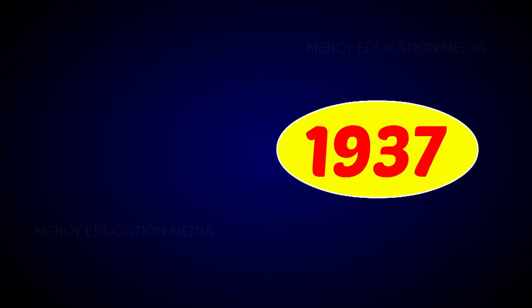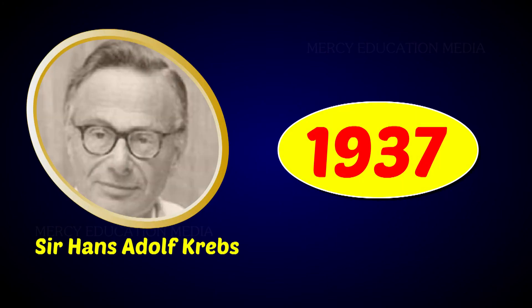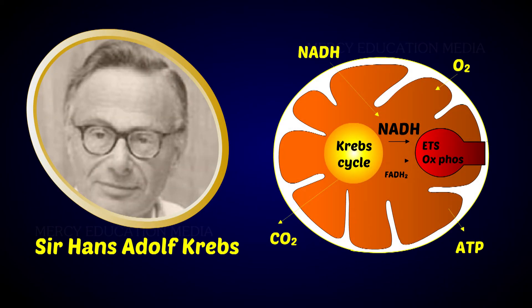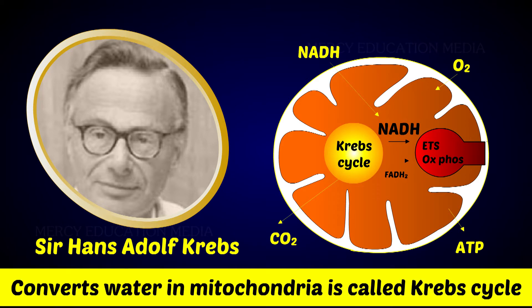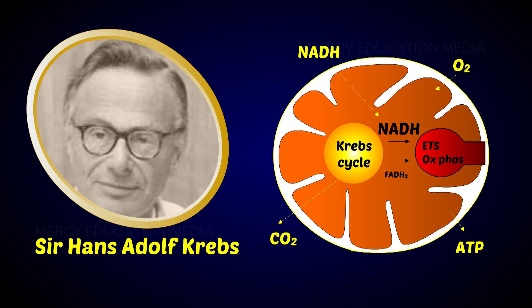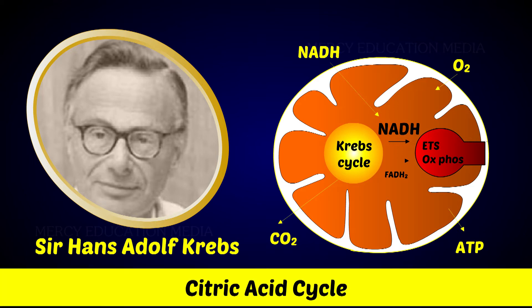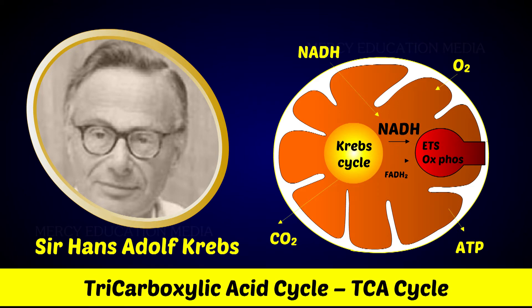In 1937, Sir Hans Adolf Krebs described the catalytic role of pyruvic acid for the production of energy in the cell. This series of cyclic reactions involved in converting pyruvic acid to carbon dioxide and water in mitochondria is called Krebs cycle. It is also known as citric acid cycle or tricarboxylic acid cycle, i.e., TCA cycle.